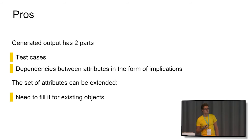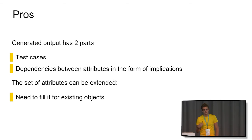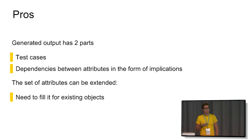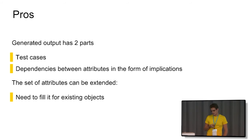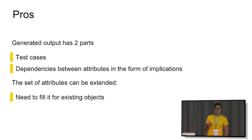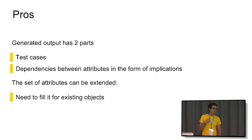What are the main pros of using attribute exploration? You get two parts of the result: test cases written as objects, and dependencies between attributes — you do not have to keep track of all possibilities in your head; the procedure stores that information. Also, the set of attributes can be extended at any moment. You can start from any part — provide some counter-examples, ask what implications hold, and then proceed. If you decide to extend the set of attributes, you only need to mark which existing objects have those new attributes.